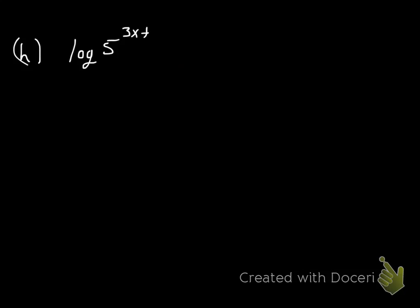And then we'll look at some other things you might run into. Let's say we have log of 5 to the 3x plus 7. So we're going to use the power rule to bring down the exponent of 3x plus 7. And then one other thing we can do is we can use the distributive property. So it would be 3x times log 5 plus 7 log 5.